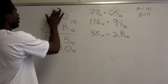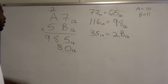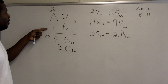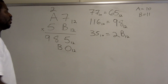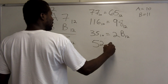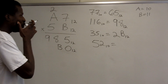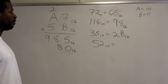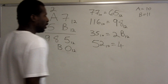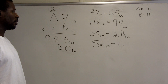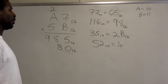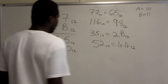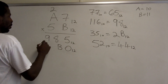Now 5 times a is 5 times 10, which is 50. Adding the carried 2 gives 52 base 10. How many groups of 12 are in 52? There are four groups of 12, giving 48, with a remainder of 4. So 52 base 10 is 44 base 12. I record the 4 and 4.